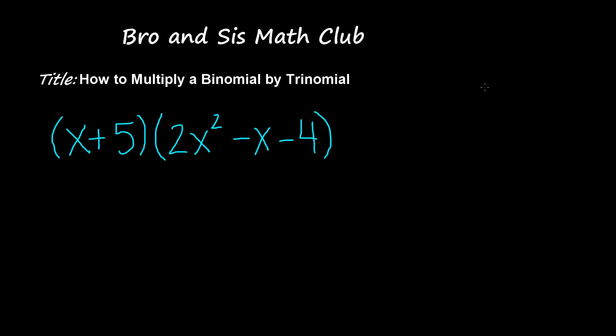So to multiply a binomial with a trinomial you need to use the distribution method in which we'll distribute the first term in this binomial which is x plus 5 to each of the terms in this trinomial which are 2x squared minus x minus 4. So let's get started.